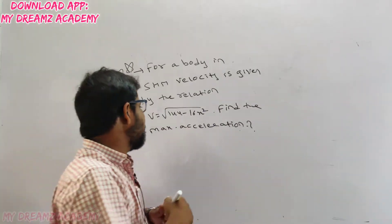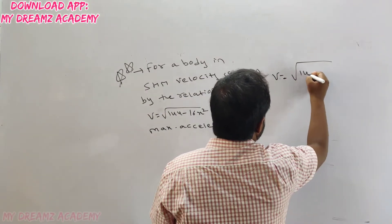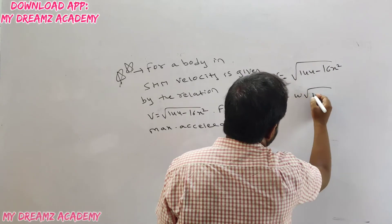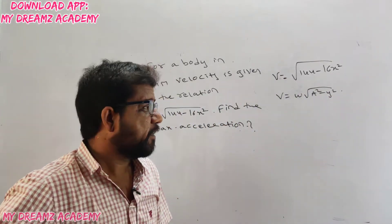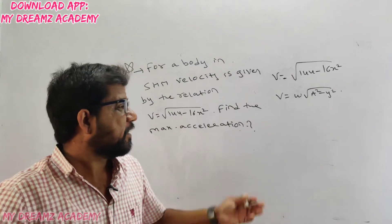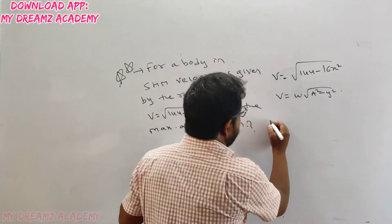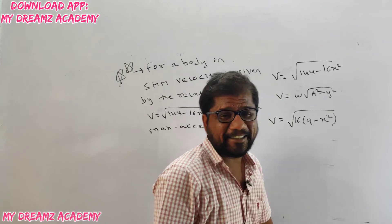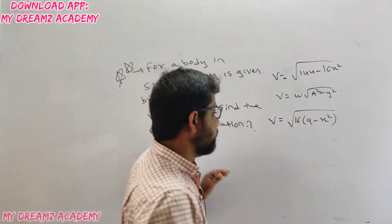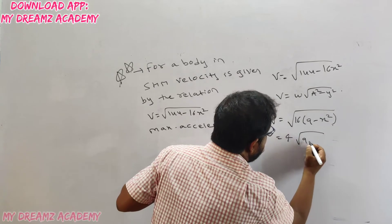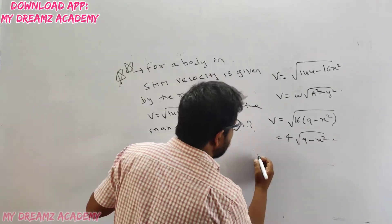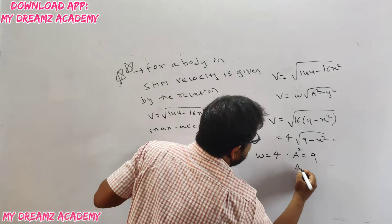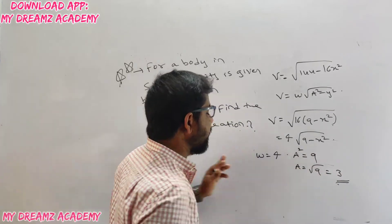Compare v = √(144 − 16x²) to the standard formula v = ω√(A² − y²). Take 16 as common factor: v = √(16(9 − x²)) = 4√(9 − x²). So ω = 4 and A² = 9, meaning A = 3.